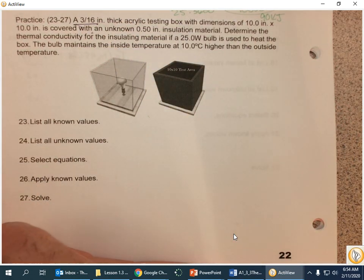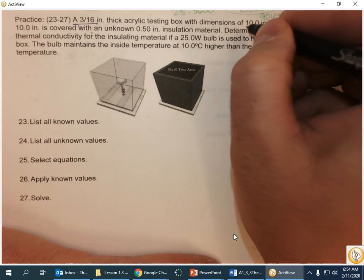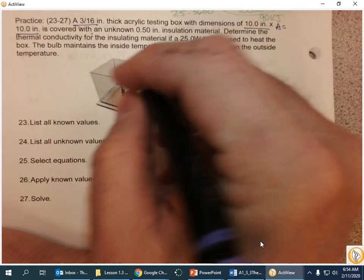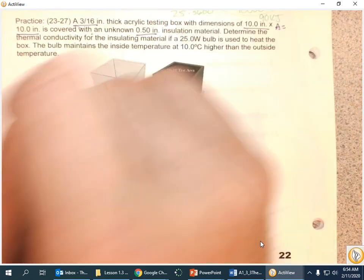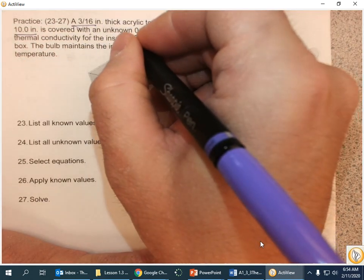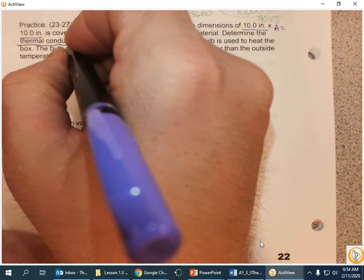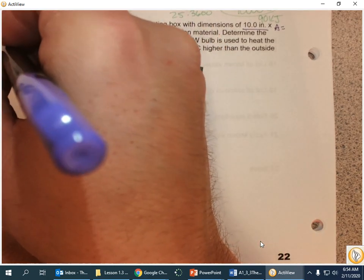We've got a 3/16ths of an inch thick acrylic testing box. It is 10 inches by 10 inches. I'm going to use that to find area. Covered with a half inch of insulation material, so that'll be my thickness. Determine thermal conductivity. That's my unknown, and I know that that's K.